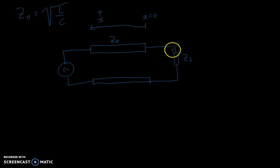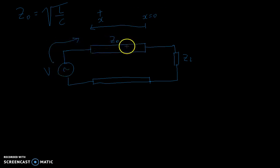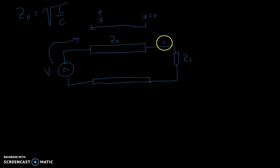This is V, this is the driver. The voltage signal will start here, it will travel down the line. It will travel the line, will charge the capacitors, the inductors, and the voltage will travel down this way. And here there's a load.